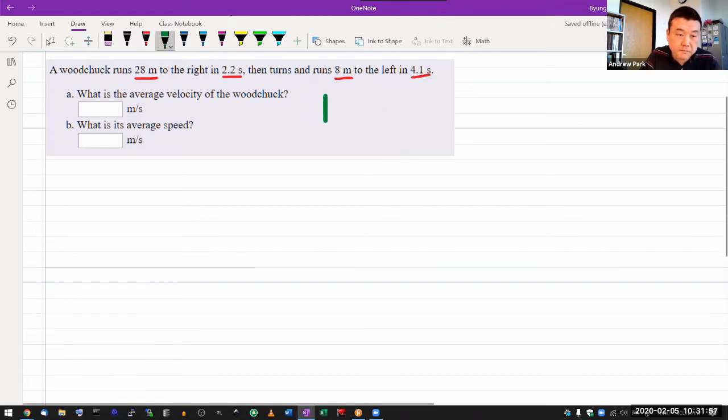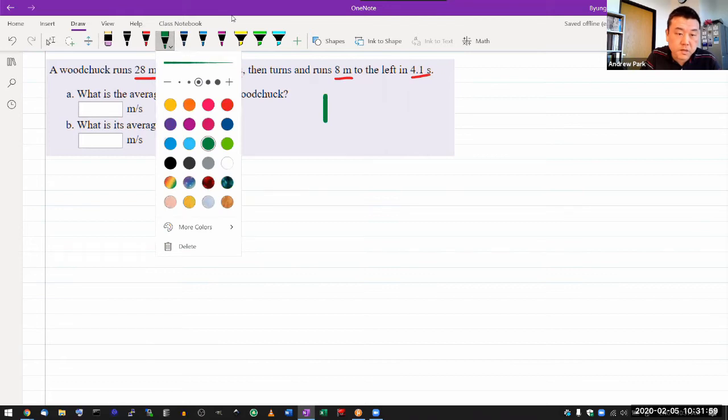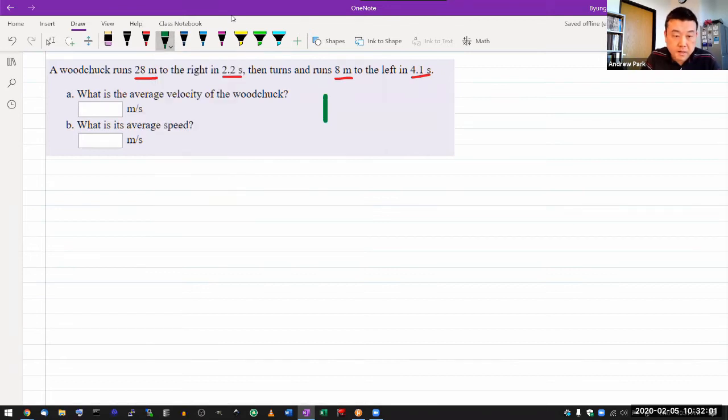So if this is the point where the Woodchuck is starting from, then it's saying that it's running to the right 28 meters. So let me draw some long distance here. All right. Stops here at 2.2 seconds, and then turns and runs 8 meters to the left. So it's some shorter distance. All right. That feels like all the information.